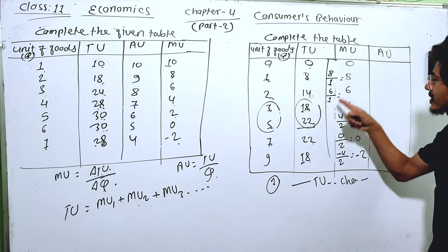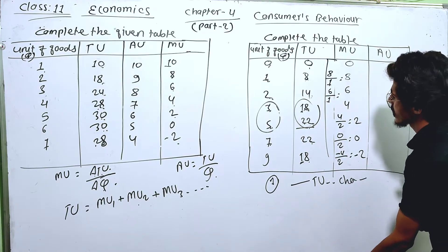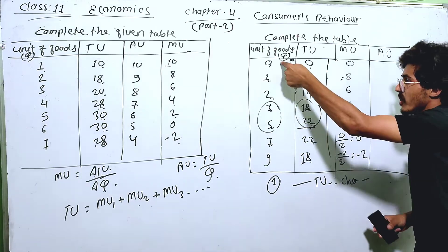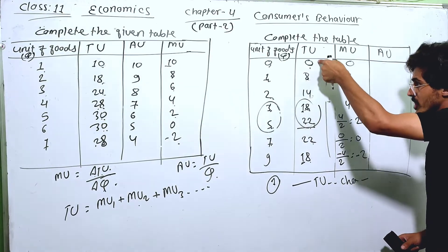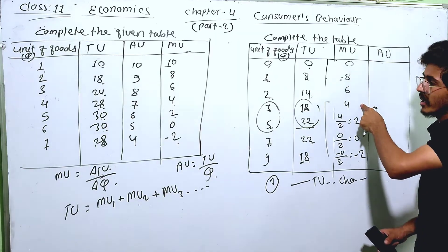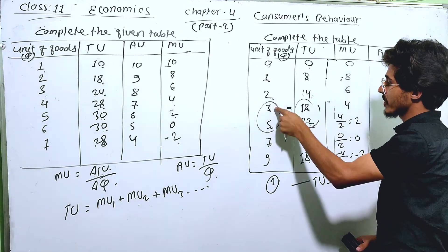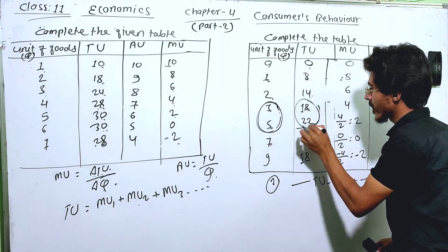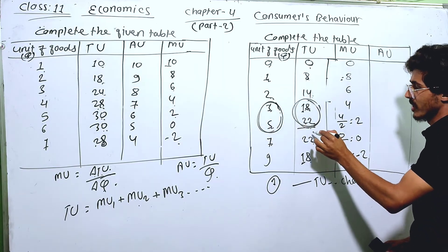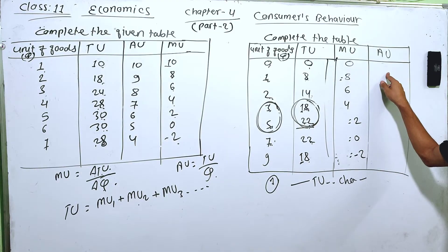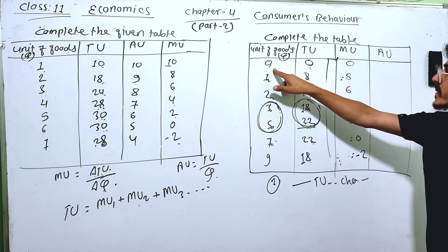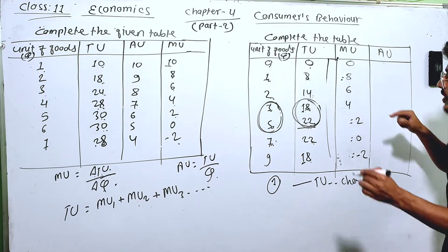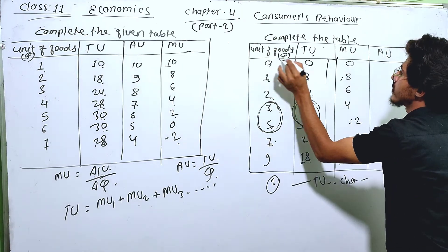The marginal utility will be the change in total utility divided by the change in total quantity. The average utility will be the total utility divided by quantity. TU divided by Q.